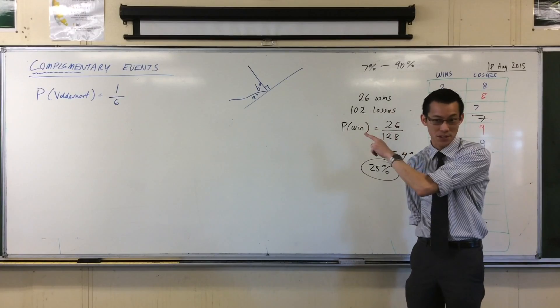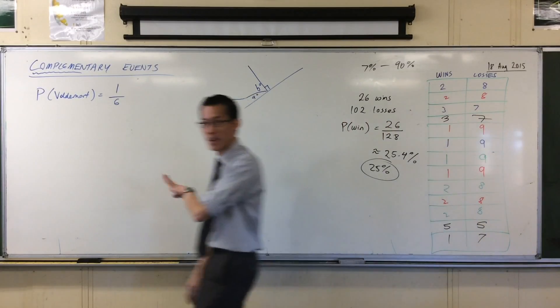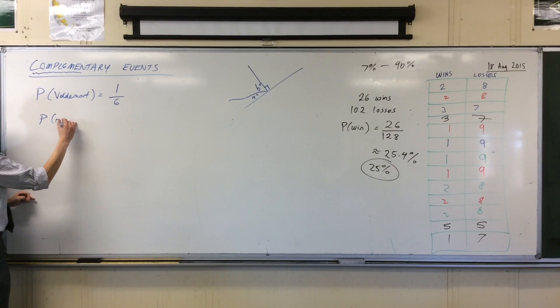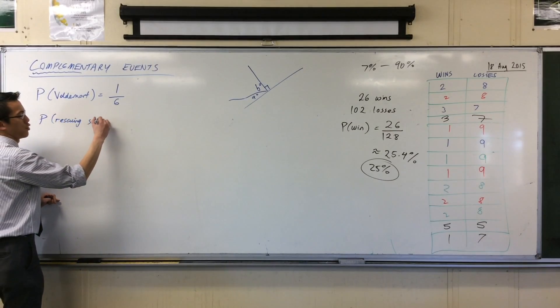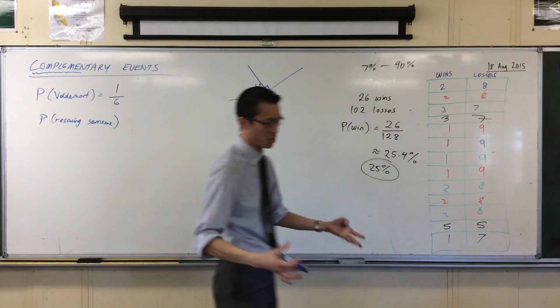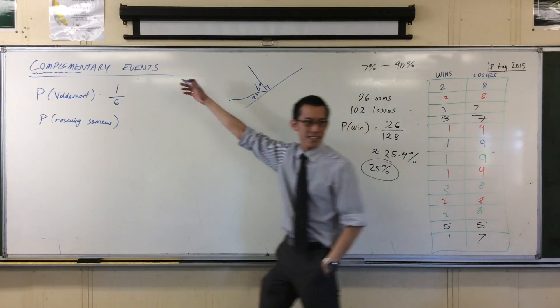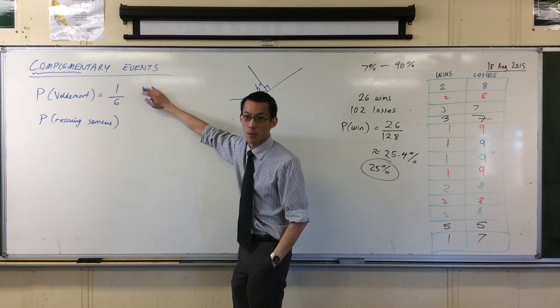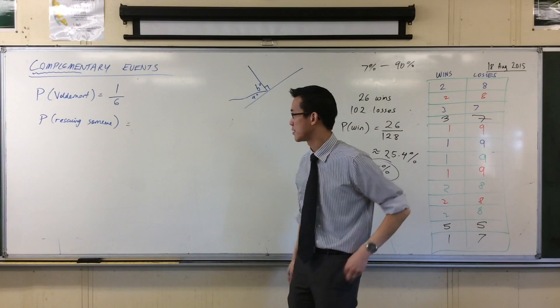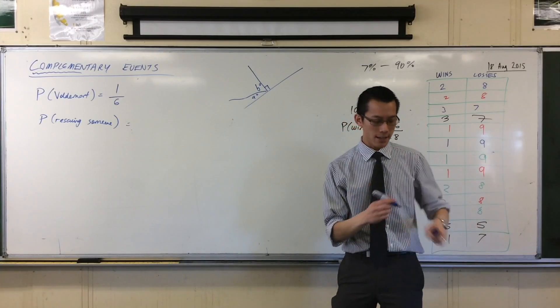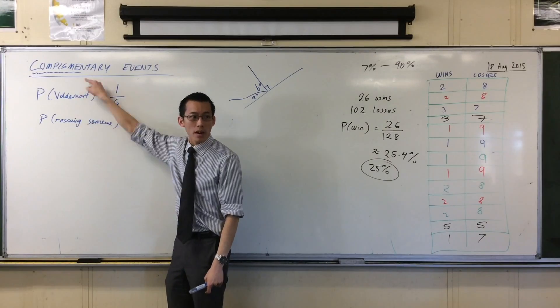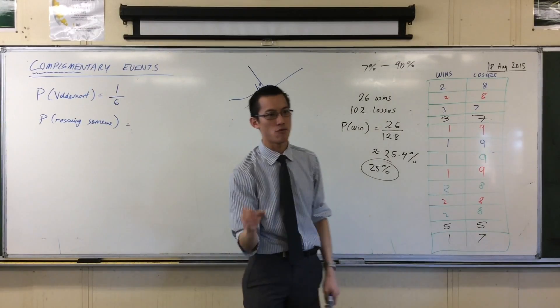So we would say this outcome is 1 out of 6. Then I would say, as you were trying to roll, you were trying to do the opposite of this. You were trying to rescue someone. So I could say the probability of rescuing someone, I'm just assuming when you first roll, not worrying about the fact that if you've rescued someone you can't rescue them again, it's simply the opposite of this. So I think it's 5 out of 6.